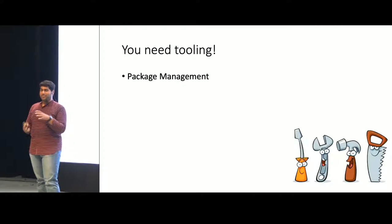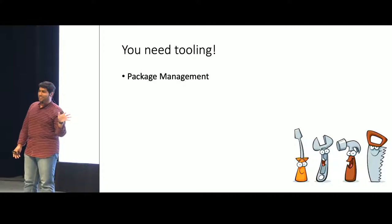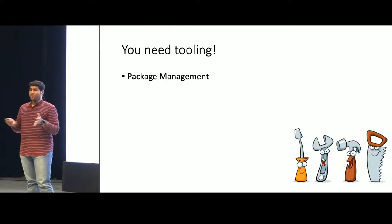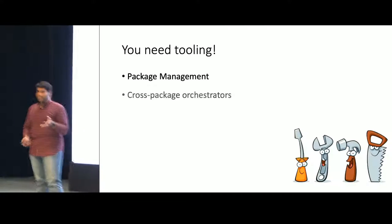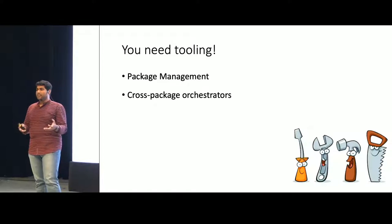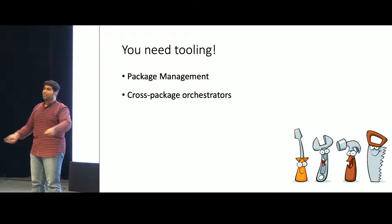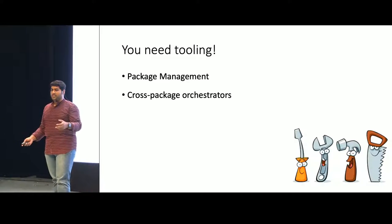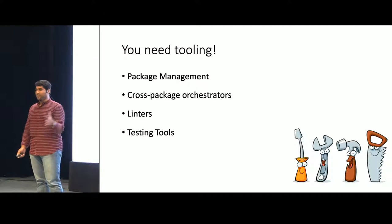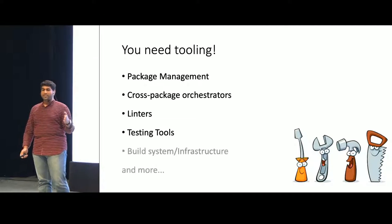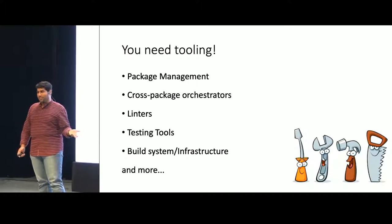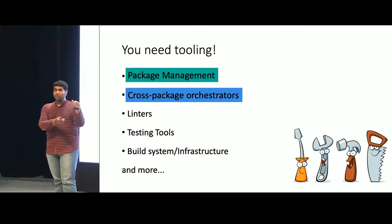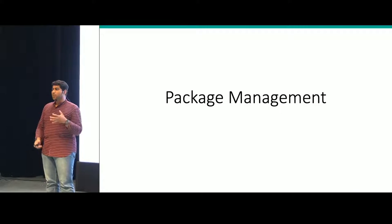To ensure all of this goes smoothly, you need a lot of tooling. Tooling is needed across several areas: you need good tooling to manage all package dependencies and packages in one repo effectively. You also need cross-package orchestrators — commands or scripts that can be run across packages in a uniform and easy manner. You also need linters, testing tools, build systems and infrastructure. We'll mainly focus on package management and cross-package orchestration.